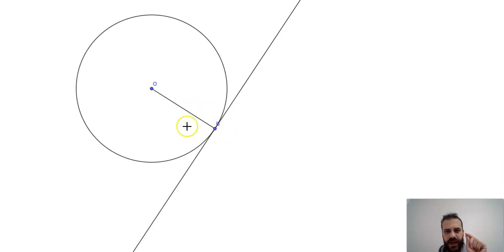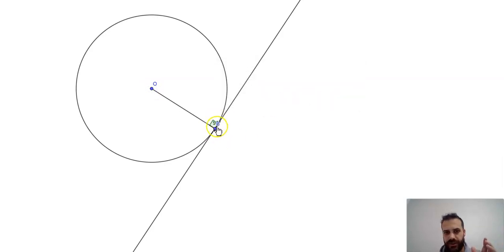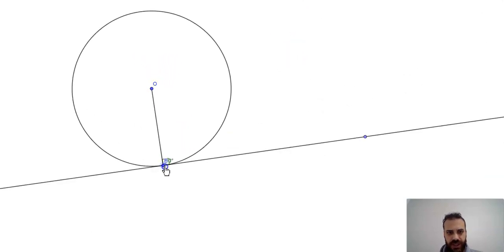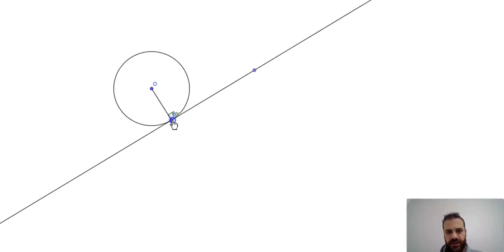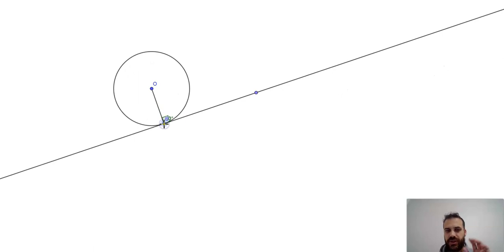The tangent touches where the radius touches. If I measure the angle between the radius and the tangent, what do you think it would be? Let's measure that angle. It's a right angle, 90 degrees. We can change the size of the circle or rotate it around, and that angle stays at 90 degrees. That's the theorem we'll be proving.